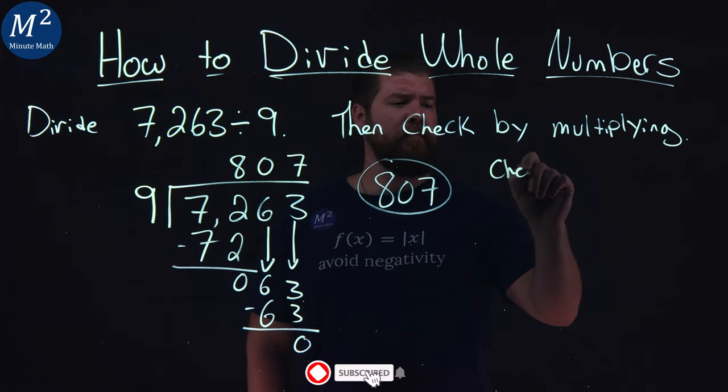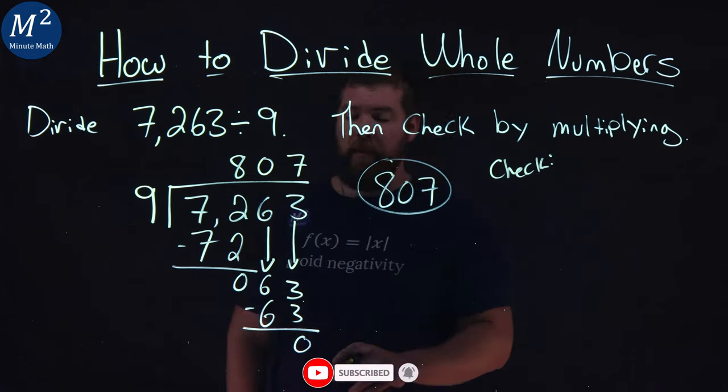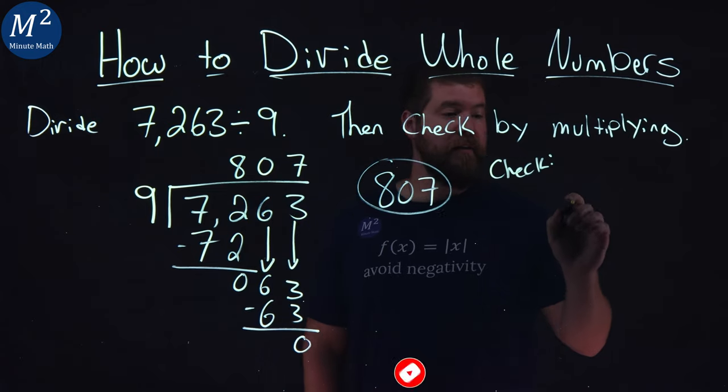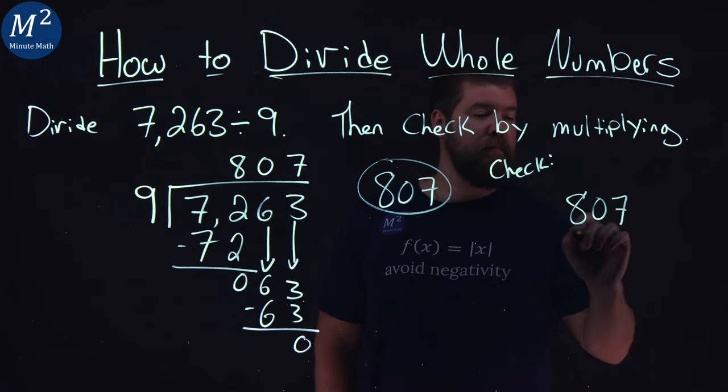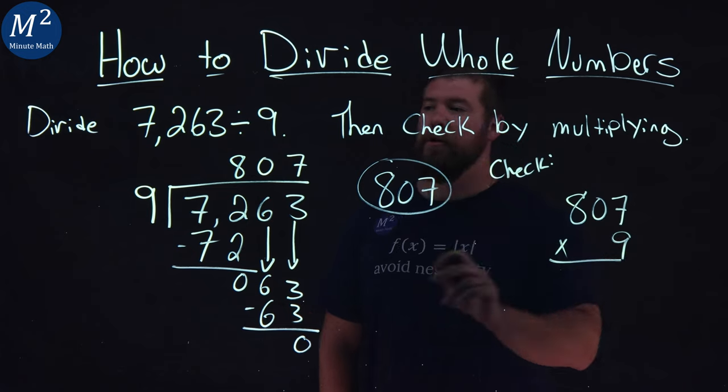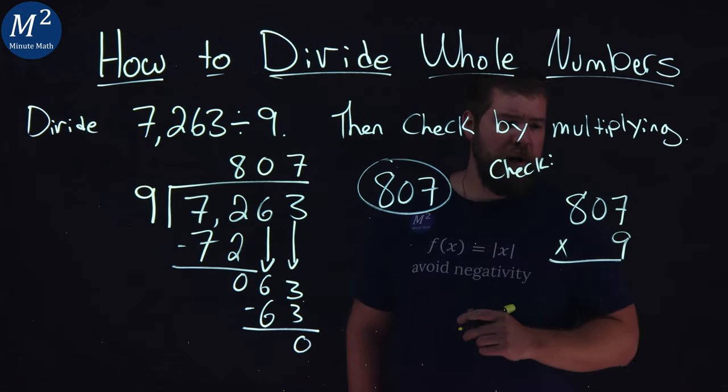Now we got to check it. To check it, I'm going to take 9 and multiply 807 by it. So 807 times 9. We should get 7,263 if we did our work right.